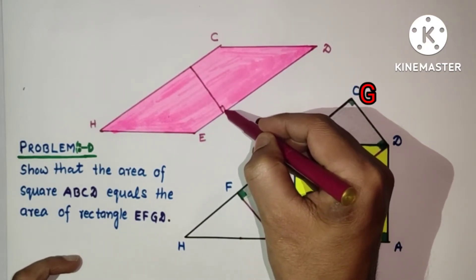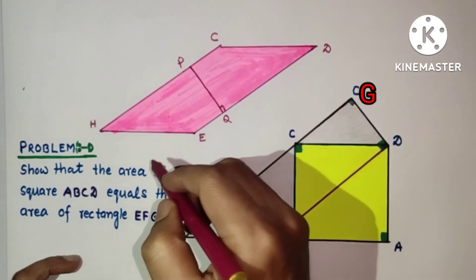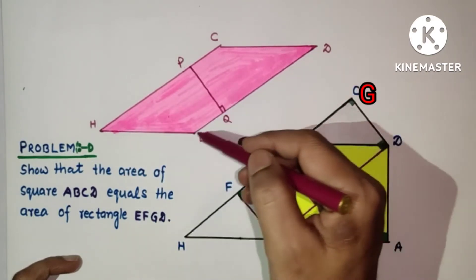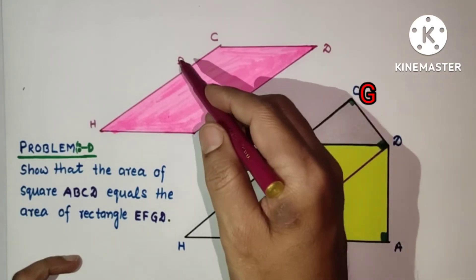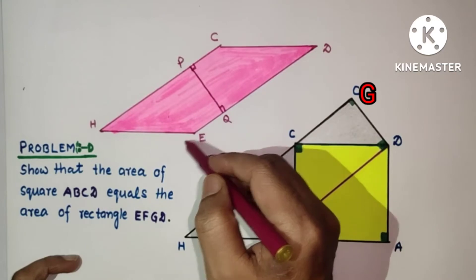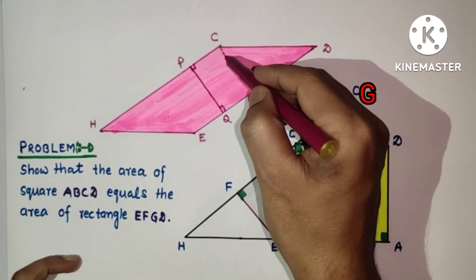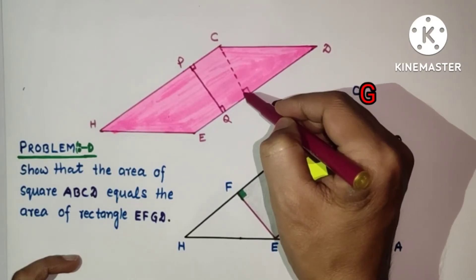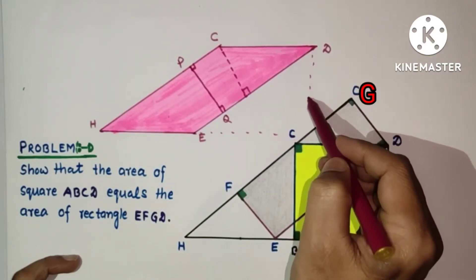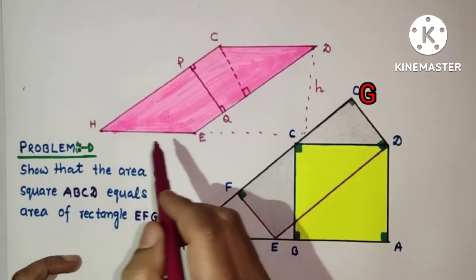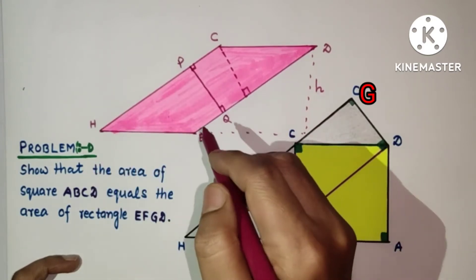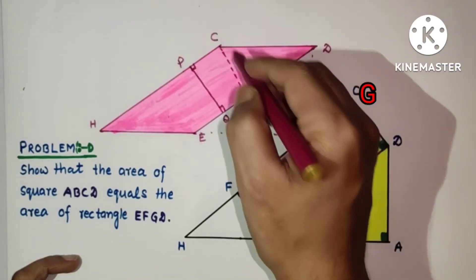Let us suppose points P and Q are marked. If we take ED as the base of the parallelogram, then the area of the parallelogram will be base times height, which is ED times PQ. Alternatively, if we extend and drop a perpendicular from another vertex, the height becomes CM. So the area of this parallelogram is either ED times PQ or ED times CM.